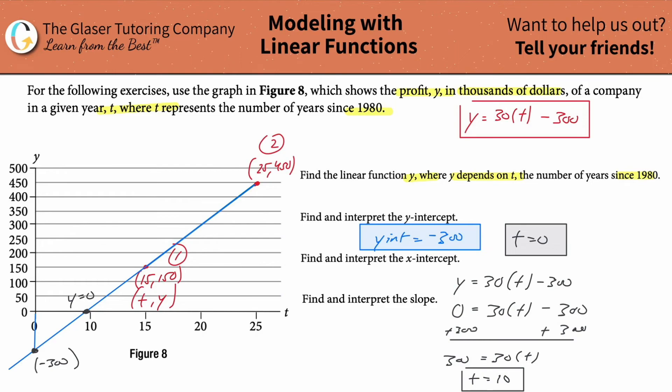This is known as the break even point. So now they're finally becoming profitable after this point, and they were unprofitable before that point. They're breaking even at that point. So that's the significance. And the answer was 10.